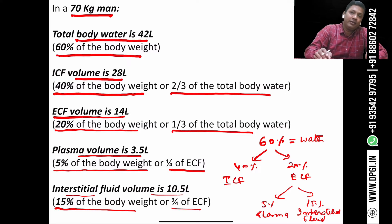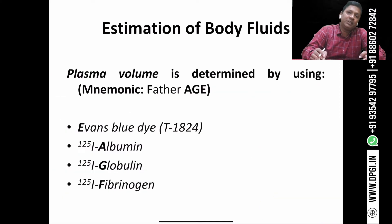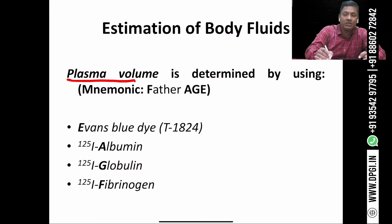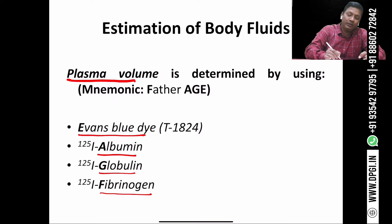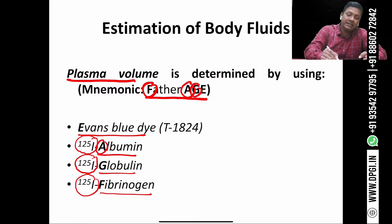The various body fluid compartments are estimated by the dilution principle. To estimate plasma volume, we use Evans blue dye, radioactive albumin, radioactive globulin, and radioactive fibrinogen — with albumin, globulin, and fibrinogen labelled with iodine-125. A useful mnemonic to remember is 'FAGE': F for fibrinogen, A for albumin, G for globulin, and E for Evans blue dye.